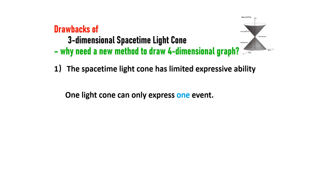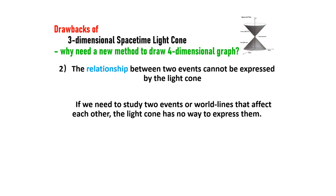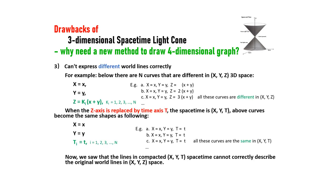First, the spacetime light cone has limited expressive ability. One light cone can only express one event. Second, the relationship between two events cannot be expressed by the light cone. If we need to study two events or world lines that affect each other, the light cone has no way to express them.